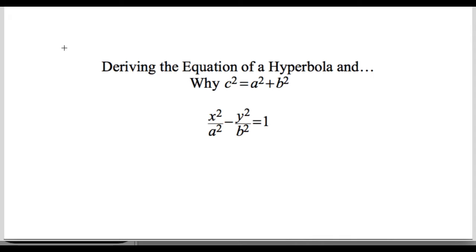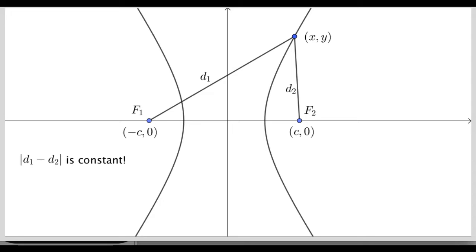Let's start with a figure. I have two points: the first focus and the second focus. A hyperbola has a kind of a weird definition — it's the set of all points in the plane, so it's this branch and also this branch, where if you find the distance from the point xy to this focus and the distance from this point to this focus, and you do the absolute value of d1 minus d2, you always get the same number.